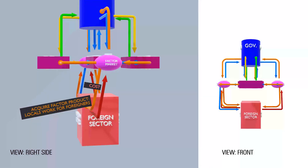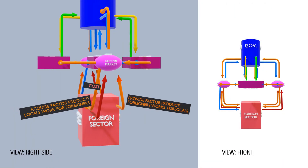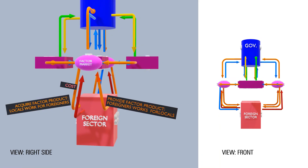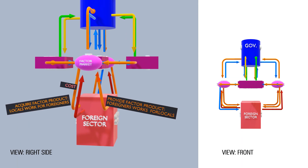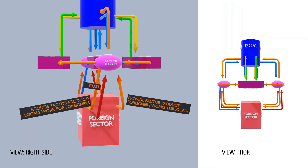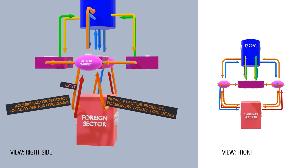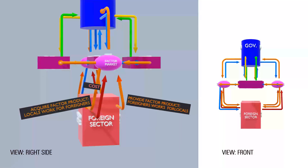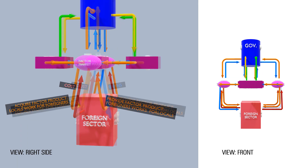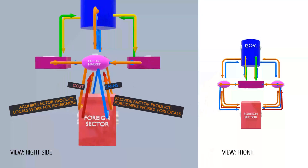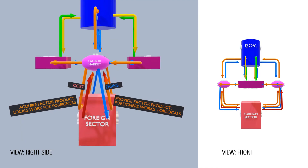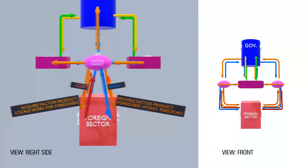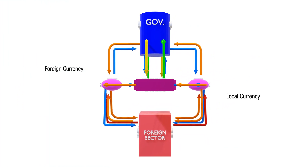Conversely, locals can also seek foreign factors of production. For example, if locals do not have an astronaut, they may bring in a foreign expert — ranging from a short-term seminar or webinar to a long-term joint venture. That work requires payment, so the foreign sector earns money, typically in local currency.